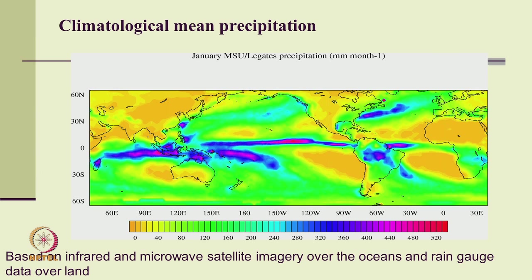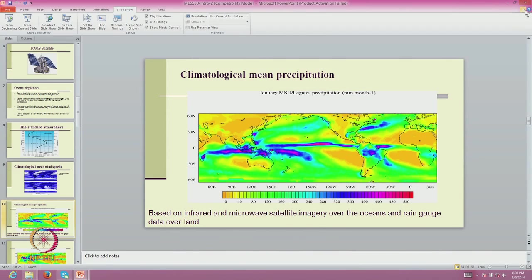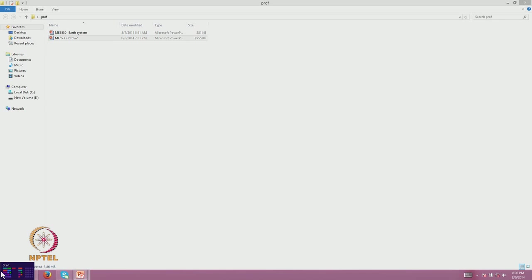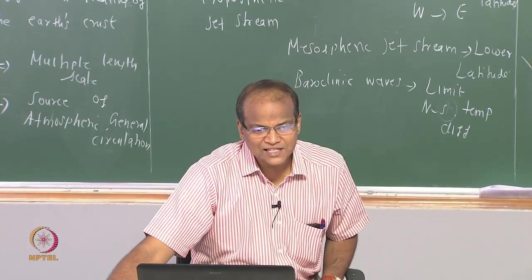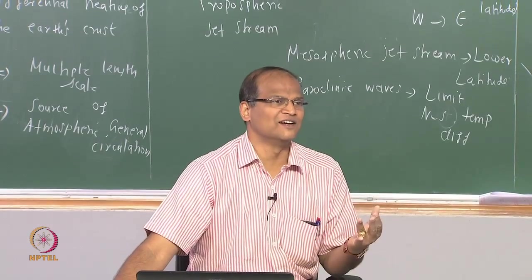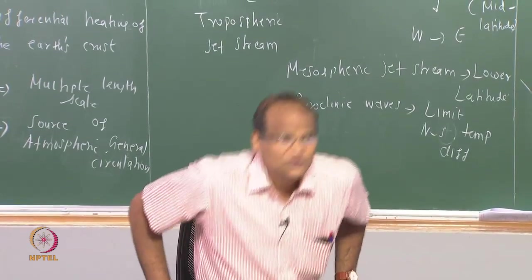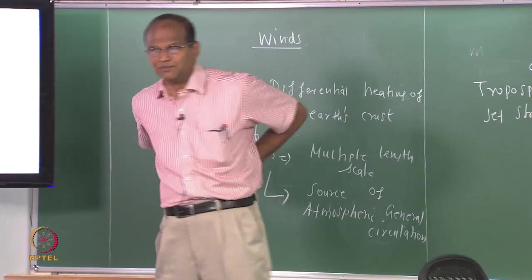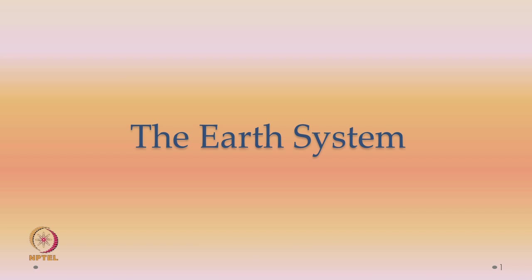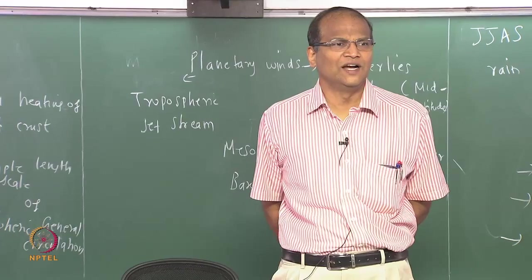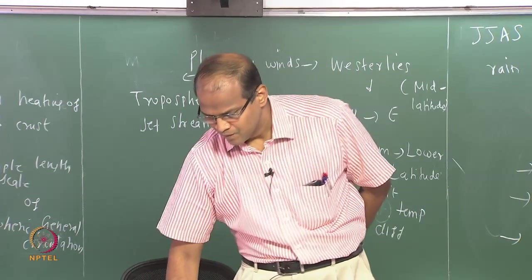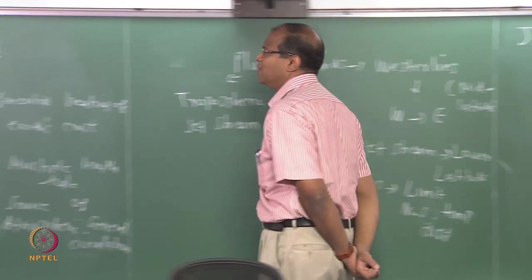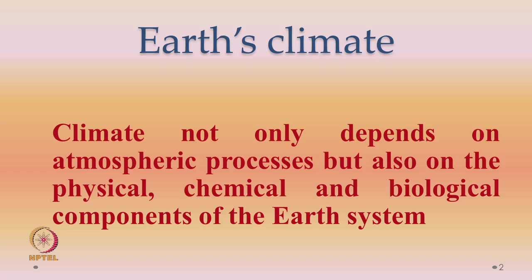Atmospheric science is a new subject — less than 100 years old. Many questions are still open. Now we move to the second chapter: the earth system. We will spend about a couple of hours on this, and then move on to atmospheric thermodynamics. An important statement: the climate of the Earth not only depends on atmospheric processes, but also on the physical, chemical, and biological components of the Earth system.